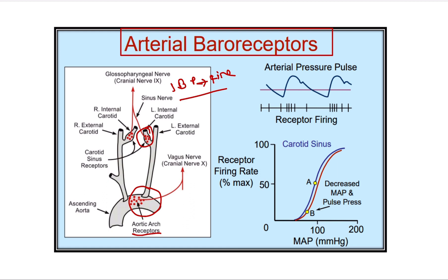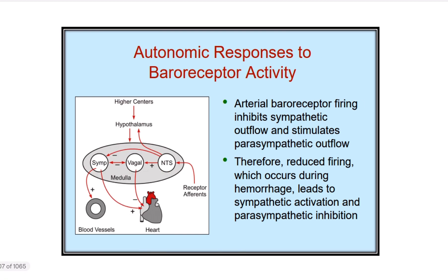In this condition, pressure is reduced — blood volume reduced, pressure reduced — so the baroreceptors will not be activated. Arterial baroreceptor firing inhibits sympathetic outflow and stimulates parasympathetic outflow. However, reduced firing occurs during hemorrhage, and this condition leads to sympathetic activation and parasympathetic inhibition. After the lung operation, there is hemorrhage or loss of blood, resulting in reduced firing of these baroreceptors.